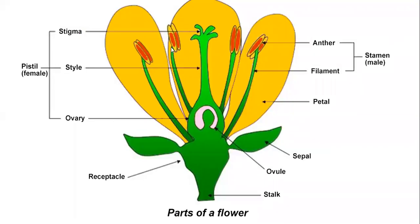So in the flower, as you can see, this green part is the sepal. At the bottom, this part is the sepal. It provides support to the developing flower.